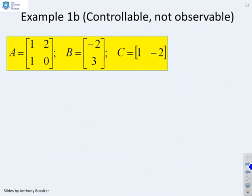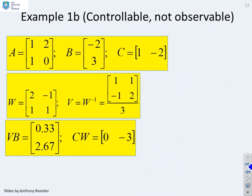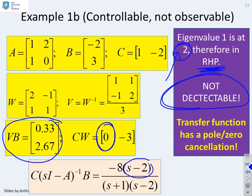Second example: again controllable but not observable. The VB matrix has no zeros, so the system is fully controllable. The CW matrix has a zero in the first column, so the system is unobservable. The corresponding eigenvalue is at two, which is in the right half plane — therefore the unobservable mode is unstable, and the system is not detectable. The transfer function again has a pole-zero cancellation, here involving S minus two.